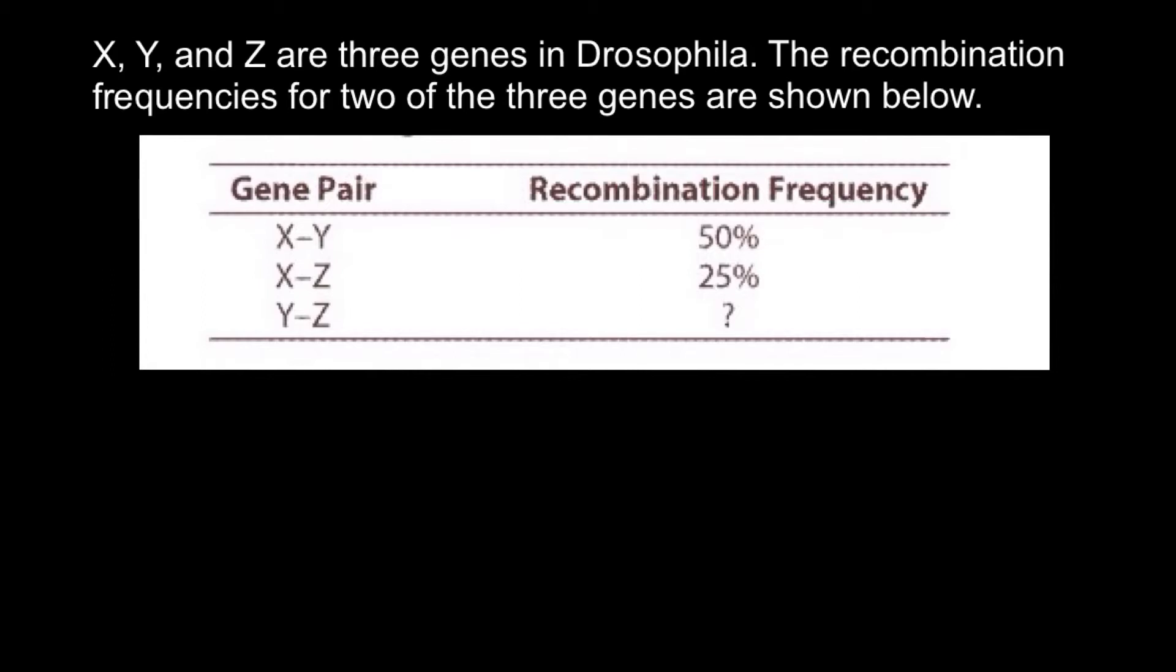So here we have a problem. X, Y, and Z are three genes in Drosophila. The recombination frequencies of two of the three genes are shown below. So we have three genes and we know